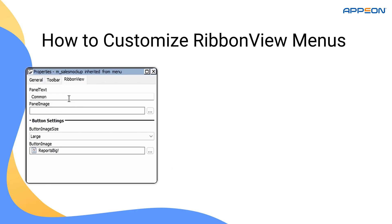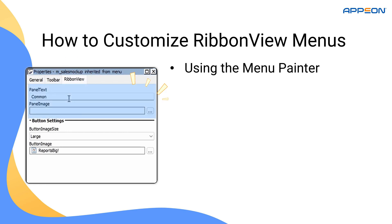RibbonView is not only easy to enable, it's also easy to customize. Starting in PowerBuilder 2025, the menu painter includes a new RibbonView tab in the properties window. This tab allows you to configure how each menu item will appear when rendered in the ribbon-style. For example, you can set the panel text to define the label of a ribbon panel, and use the panel image to display an icon when the panel is collapsed. These properties apply only to the first item in a submenu or to an item that immediately follows a separator.